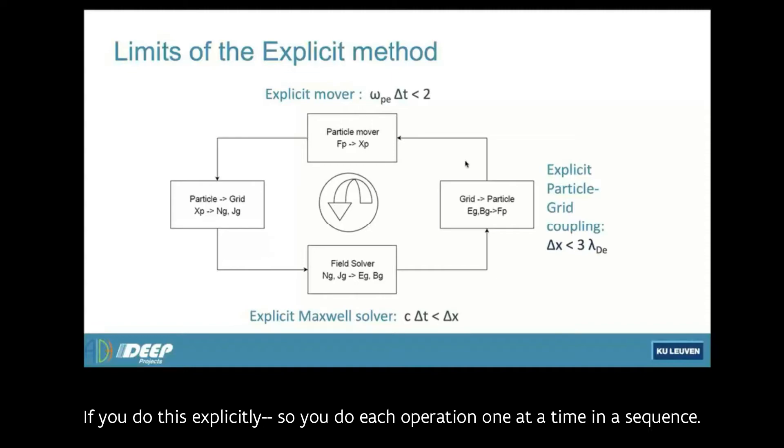If you do this explicitly, so you do each operation one at a time in a sequence, you move the particles, you interpolate it to the grid, compute the fields, interpolate the fields to the grid to the particle. These four steps in sequence introduce a severe limitation on the resolution you can use. You have to use a tremendously large resolution, just so that the system stays stable. Because of course in nature, these four operations are done all at the same time. A particle moves and the fields are evolving at the same time. You cannot break this link. But in a simulation of the explicit type, you do break this link. You do an unphysical operation by breaking this link.